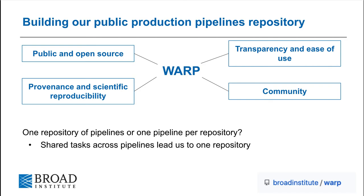The first big decision we had to make was whether we wanted to build one repository of pipelines or a GitHub org with a repository per pipeline. There are pros and cons to both approaches, neither is perfect, and both have been tried with pipelines across the community. We rely on shared tasks across our pipelines to maintain consistency, and this led us to build one repository. The decision to make one pipeline repository with shared tasks has some implications around pipeline testing and releasing that I will describe later. So, WARP began with these four goals. Let's dive into how we've tackled these goals as we build out WARP.